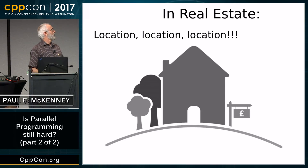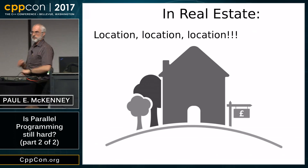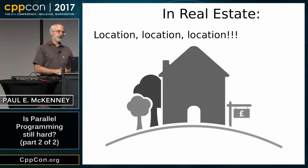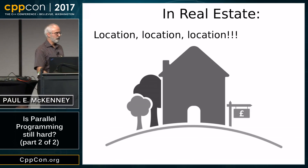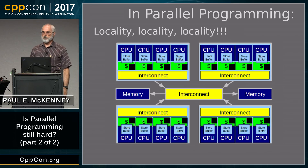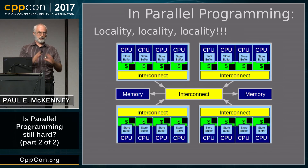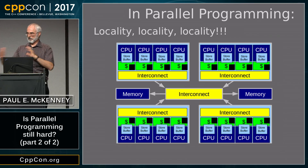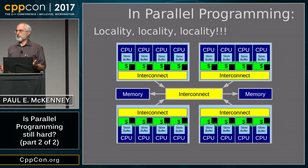In real estate, the three most important things are location, location, location. And in parallel computing, it's very similar: locality, locality, locality. If you can split your problem up so that the data can be local to a given CPU, a given socket, a given system, your life is going to be much better and things are going to go much faster.